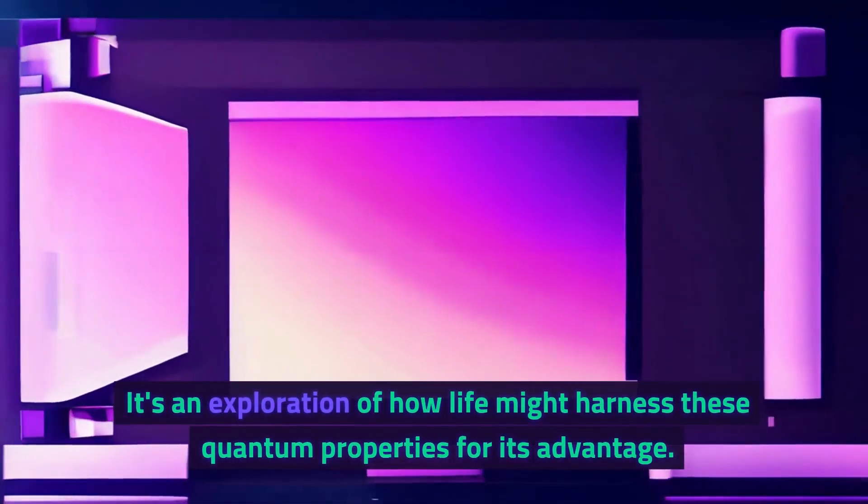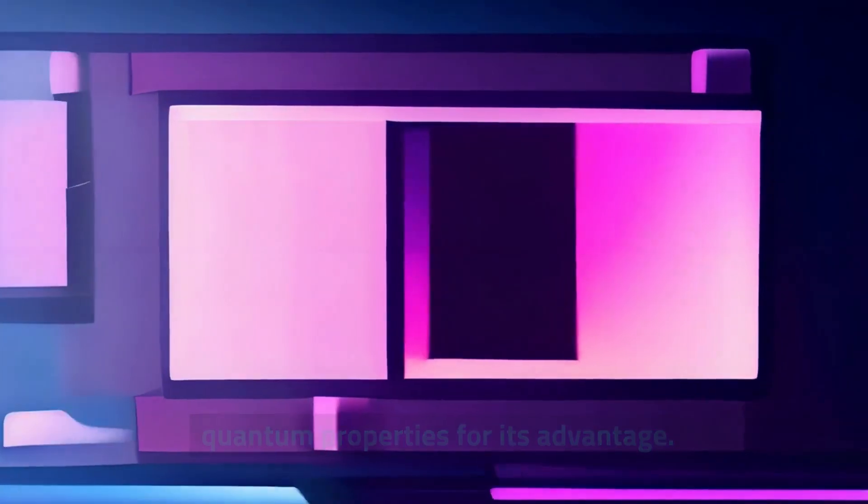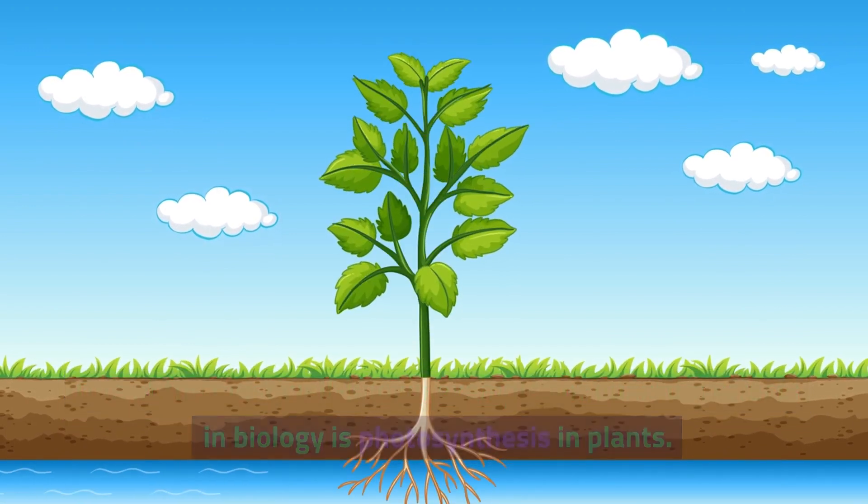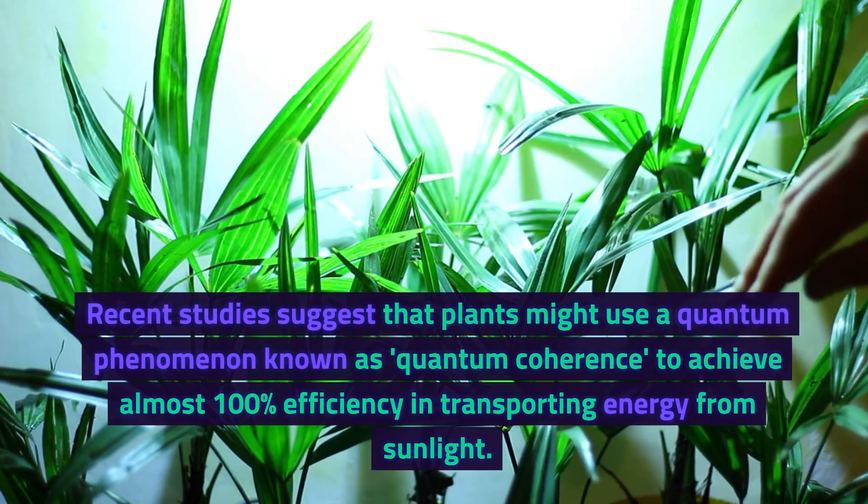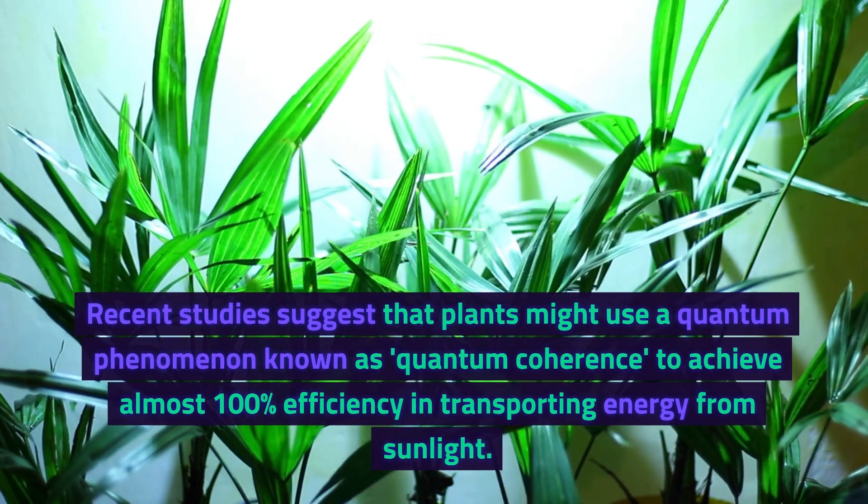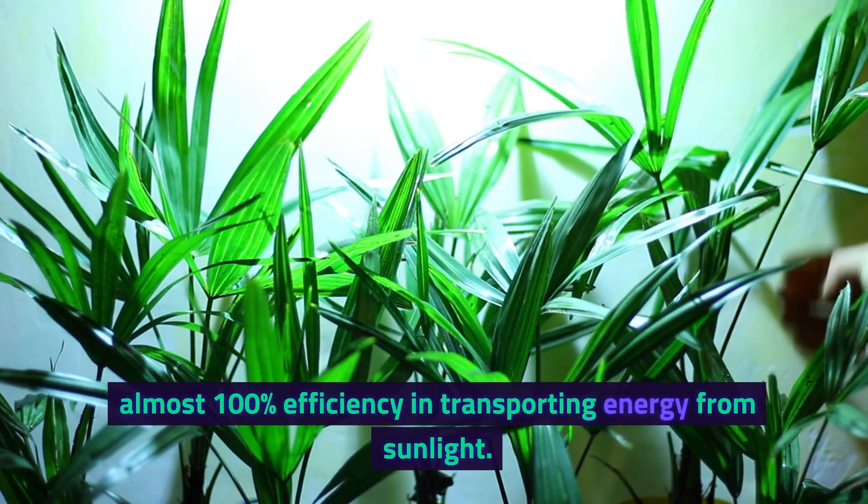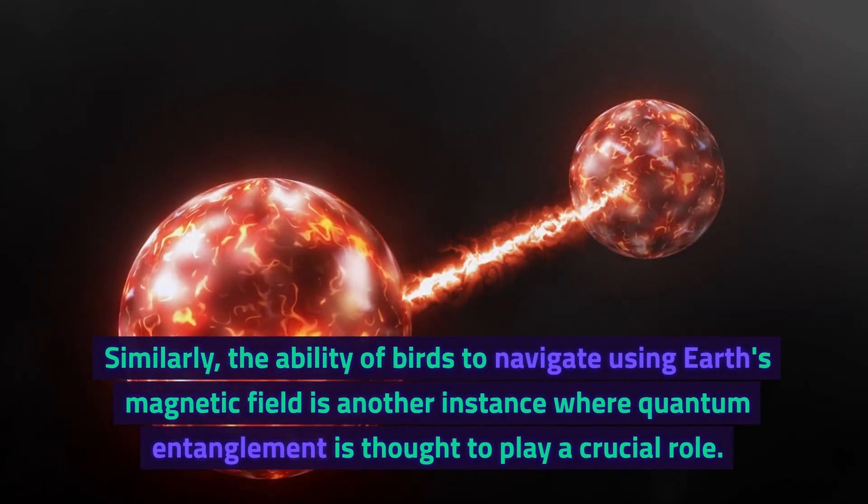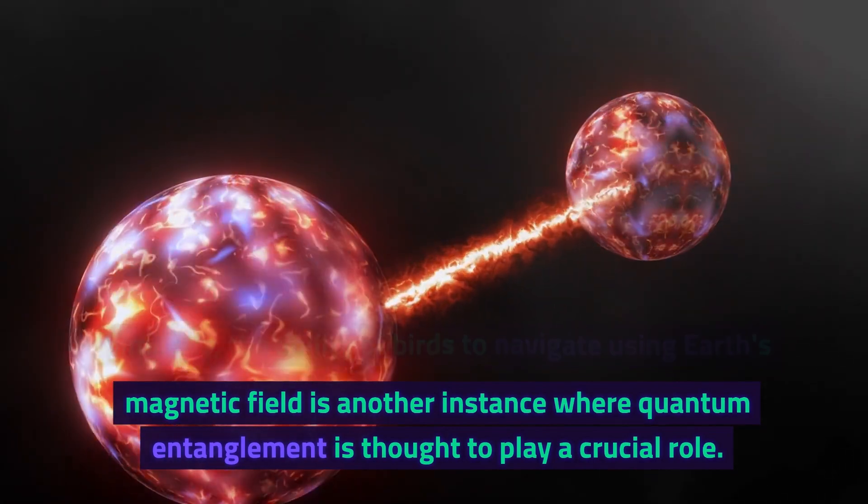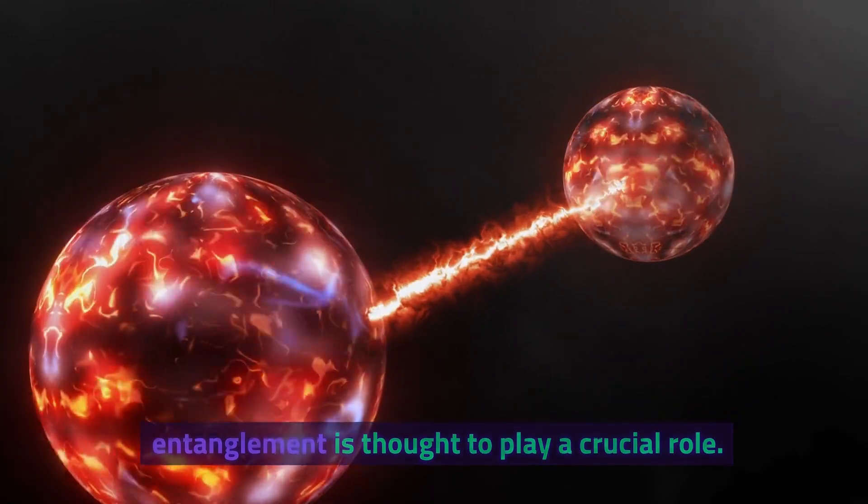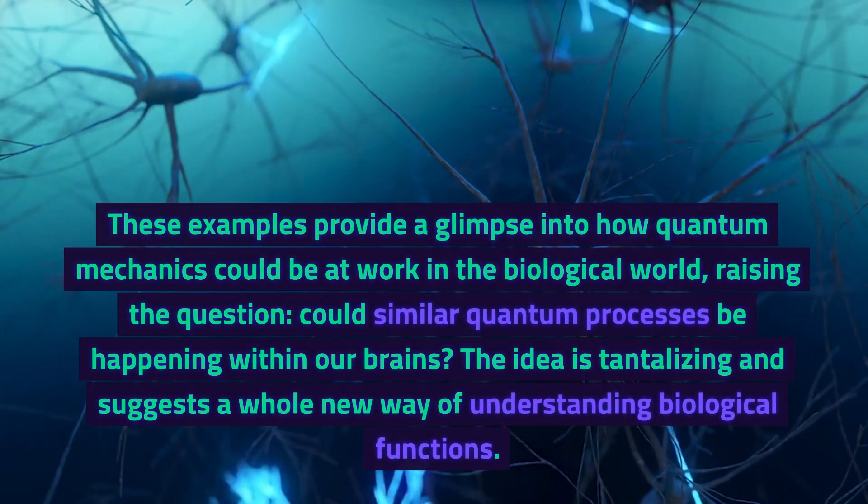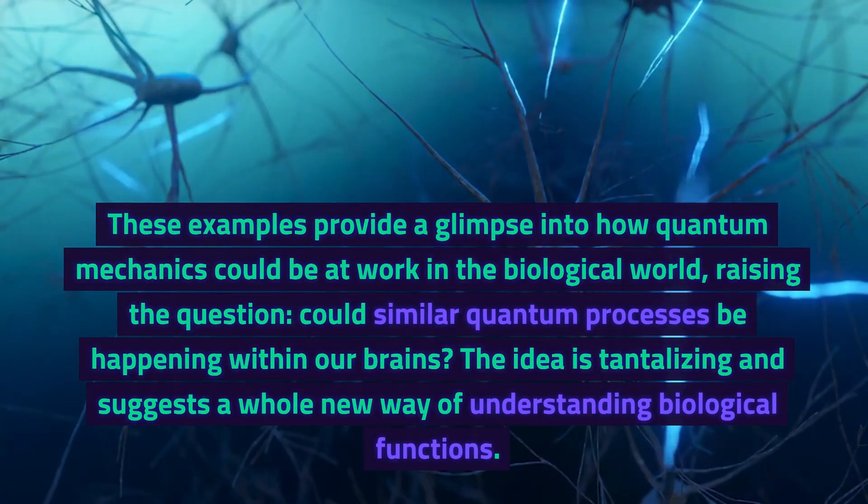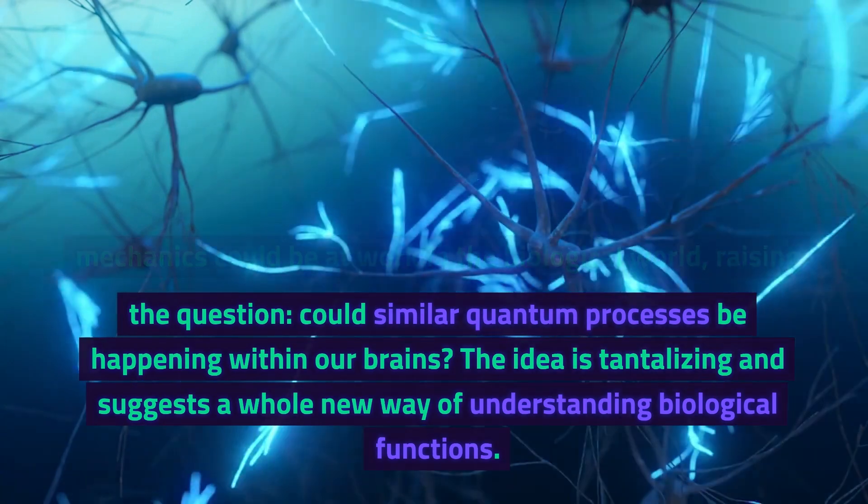It's an exploration of how life might harness these quantum properties for its advantage. One of the most well-known examples of quantum effects in biology is photosynthesis in plants. Recent studies suggest that plants might use a quantum phenomenon known as quantum coherence to achieve almost 100% efficiency in transporting energy from sunlight. Similarly, the ability of birds to navigate using Earth's magnetic field is another instance where quantum entanglement is thought to play a crucial role. These examples provide a glimpse into how quantum mechanics could be at work in the biological world, raising the question: could similar quantum processes be happening within our brains?